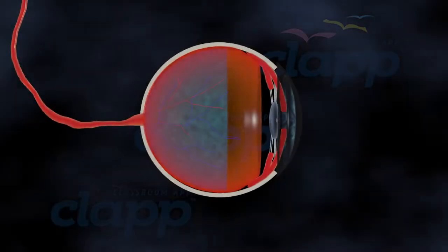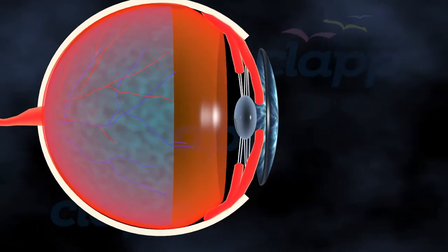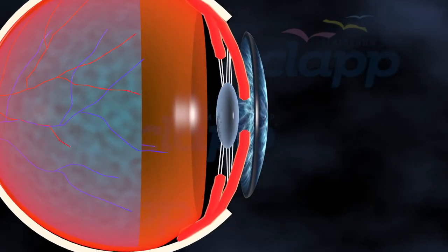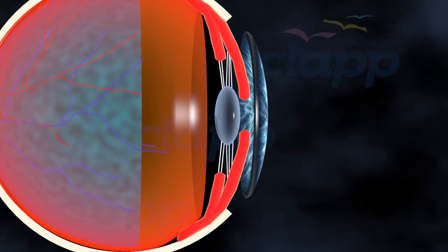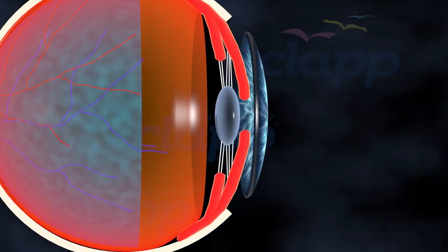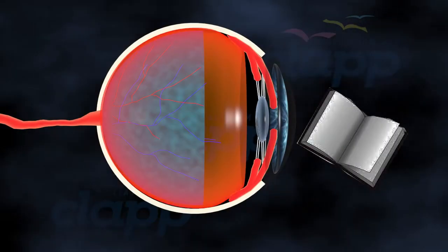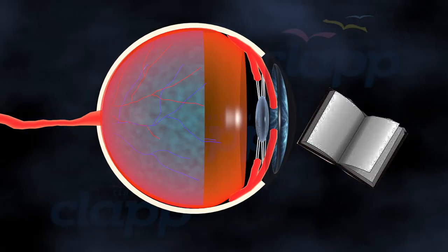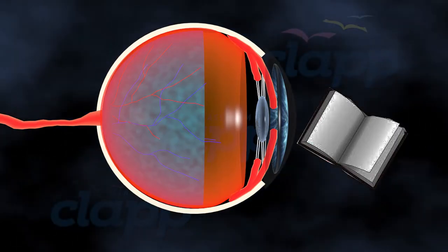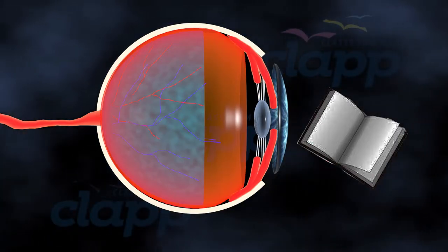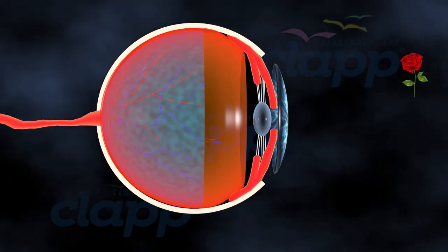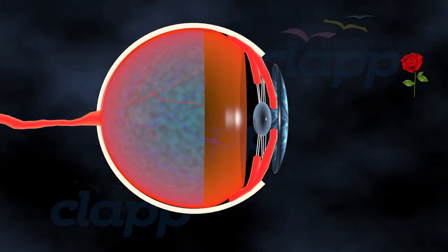One of the lens's remarkable abilities is accommodation — it can change its shape to focus on objects at different distances. When you look at something up close, like reading a book, the lens becomes thicker and more curved. And when you gaze into the distance, the lens becomes flatter.